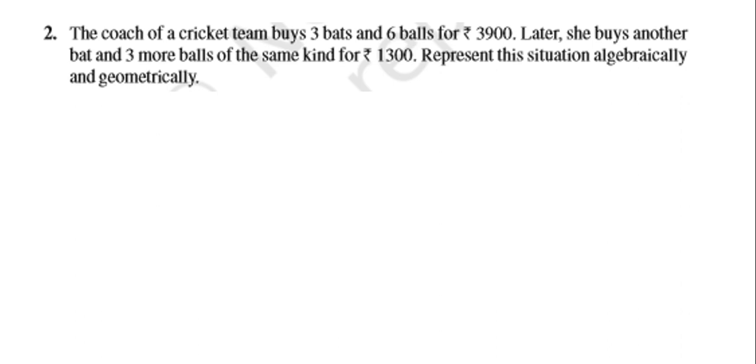The coach of a cricket team buys 3 bats and 6 balls for Rs. 3900. So we are assuming x be the cost of each bat and y be the cost of each ball. So for the first case, 3 bats and 6 balls, that will be 3x plus 6y equals 3900, and this is my equation number 1.